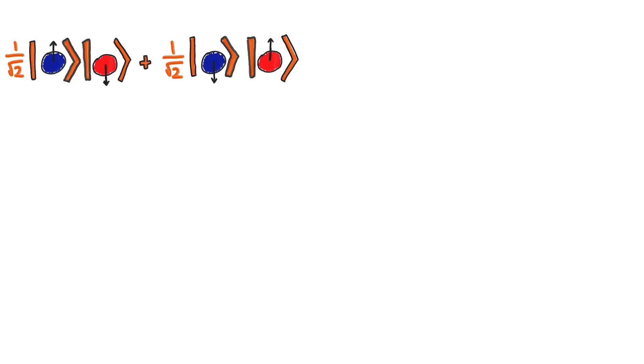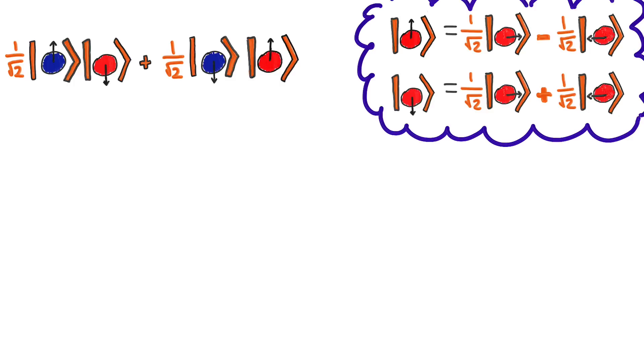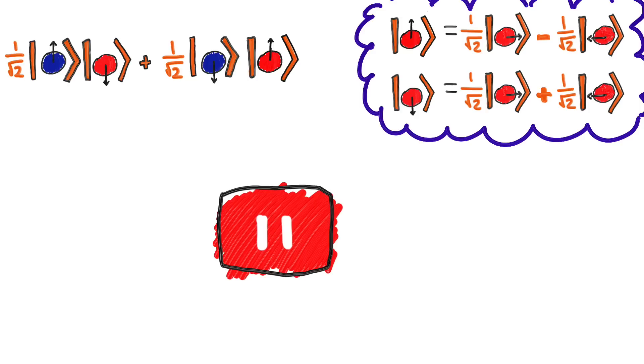But what happens in the second case where the state is still in a superposition? This is a bit tricky. What you need to do is write the particle's state, in particular Bob's particle's state, in the left-right basis. Try that and then see if you can figure out what happens.